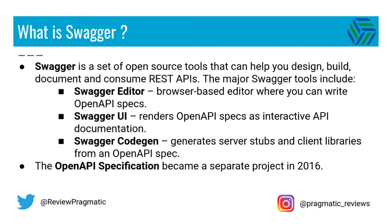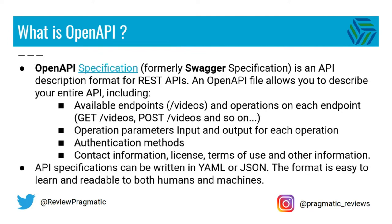The OpenAPI specification became a separate project in 2016. The OpenAPI specification, formerly the Swagger specification, is an API description format for REST APIs. An OpenAPI file allows you to describe your entire API including available endpoints, operations on each endpoint, operation parameters, input and output for each operation, authentication methods, contact information, etc.